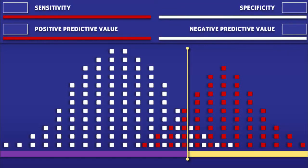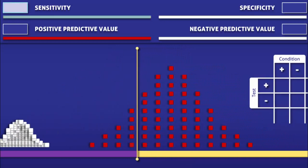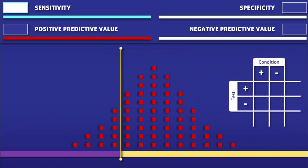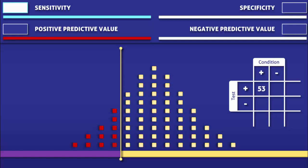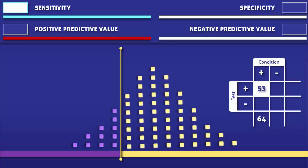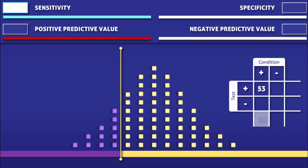Now let's use this cohort of patients to calculate each of the statistical measures, starting with sensitivity. Since sensitivity only takes into consideration people who have the disease, we are going to focus on the red squares. Looking at the relation of the red squares to the cutoff level, we find that there are 53 true positives and 11 false negatives. Since sensitivity is the proportion of people with the condition that tested positive, we calculate it by dividing 53 by 64, giving us a sensitivity of 83%.